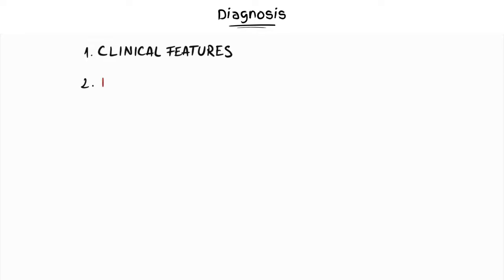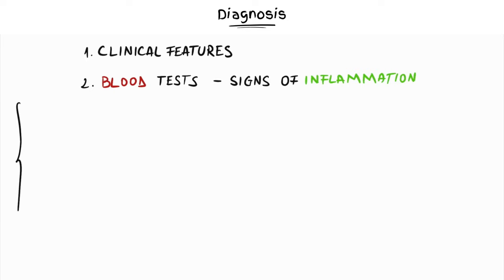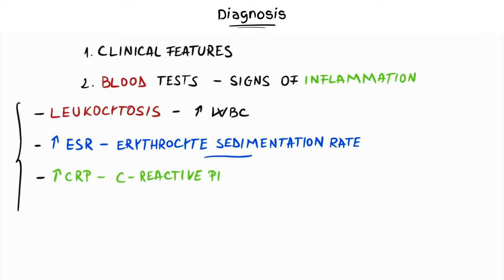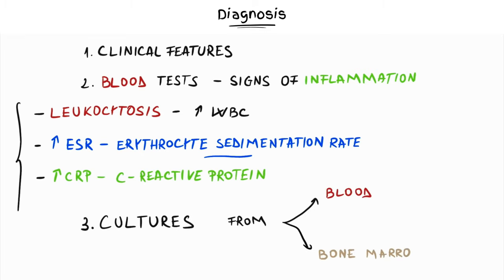Based on the clinical features, we can run some blood tests in order to see if there are signs of inflammation. We will see leukocytosis, which means a high number of white blood cells. The ESR, or erythrocyte sedimentation rate, and C-reactive protein are high as well. Next, we will take cultures from both blood and bone marrow.